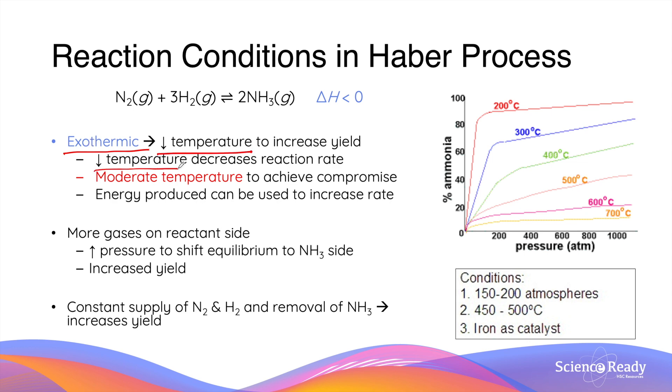So we have to strike a balance and find a compromise between low temperature and high temperature, so that not only do we have decent yield of ammonia, we also have a decent reaction rate. Therefore, a moderate temperature is usually utilized for the Haber process.